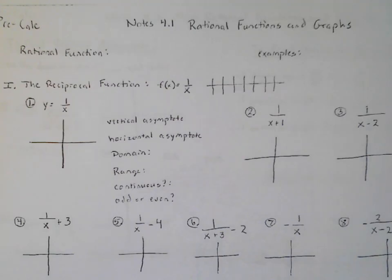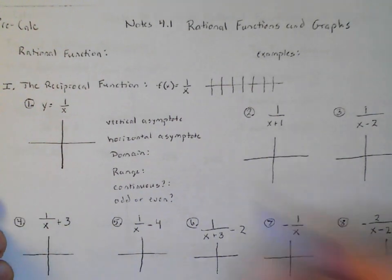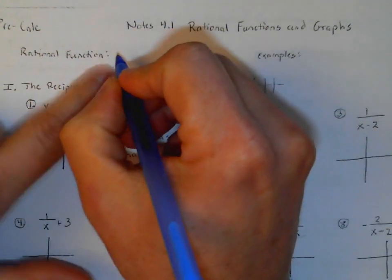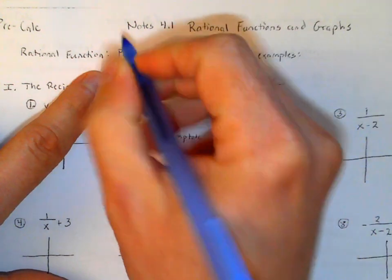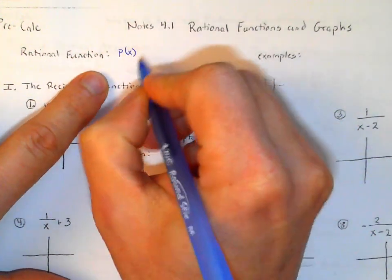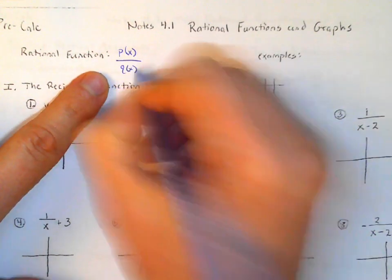These are notes 4.1. We have talked about linear, quadratic, and different polynomial functions. Today we're going to start into rational functions. A rational function is a function that can be defined by some polynomial divided by another polynomial.